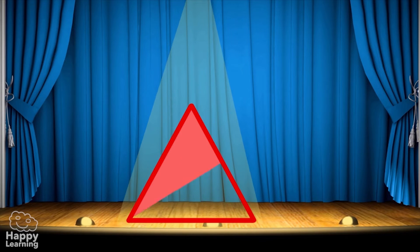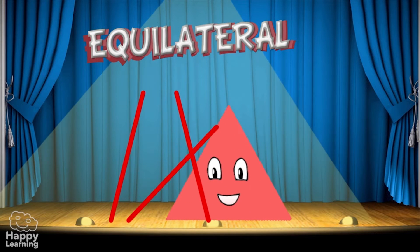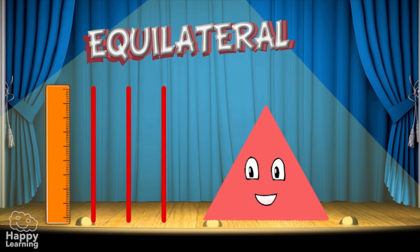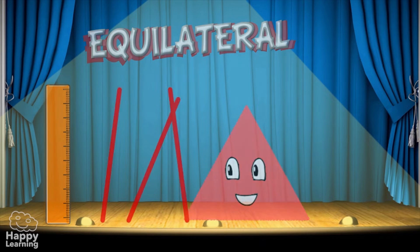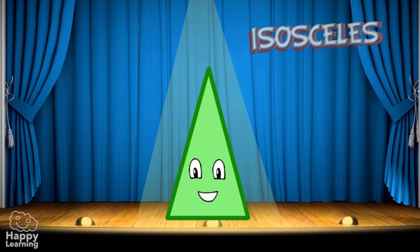In equilateral triangles, all the sides are the same length. Can you see how it's formed? Good. So this triangle is equilateral because its three sides are exactly the same.